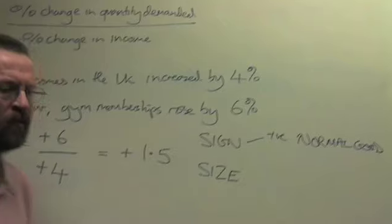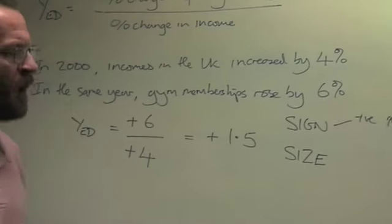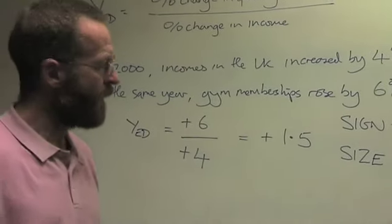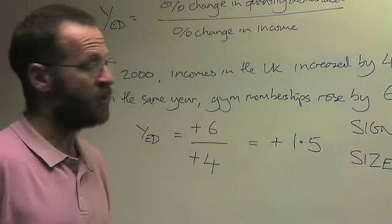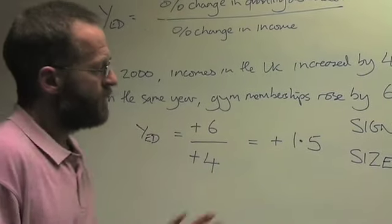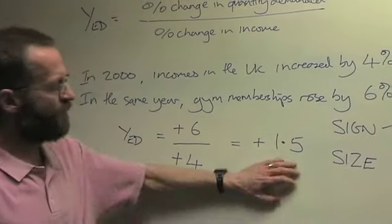In economics, a normal good is one which you buy more of as your income goes up, and you buy less of as your income goes down. So this case is definitely a normal good.